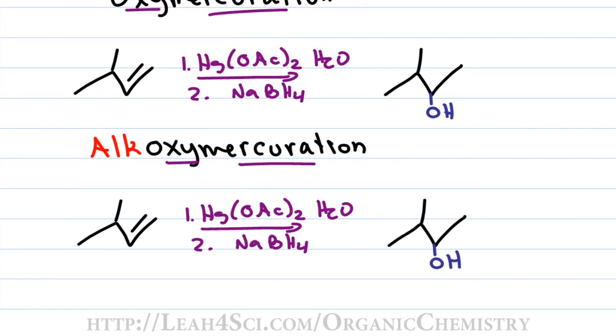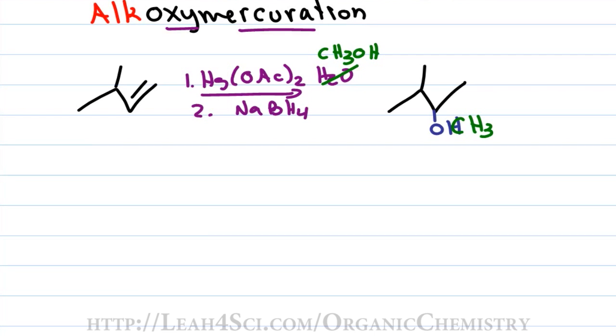If I copy over the exact reaction for alkoxymercuration, all I have to do is swap out the H2O for an alcohol. For example, methanol or CH3OH, the product instead of having an OH will have an OCH3 and the way you want to recognize this difference